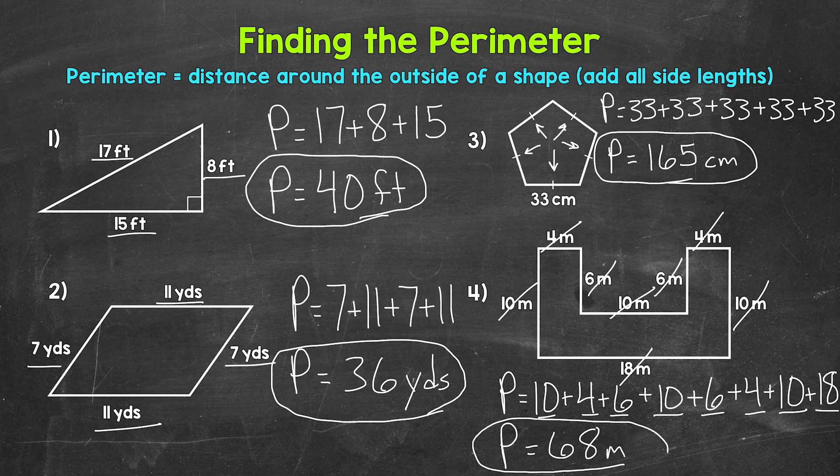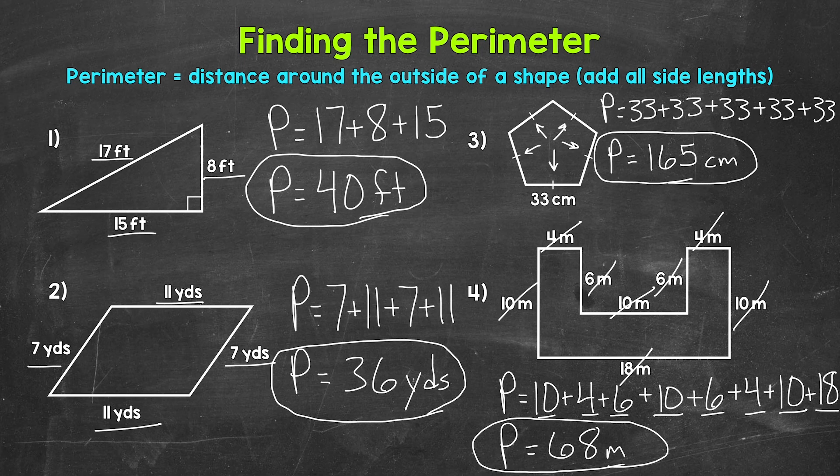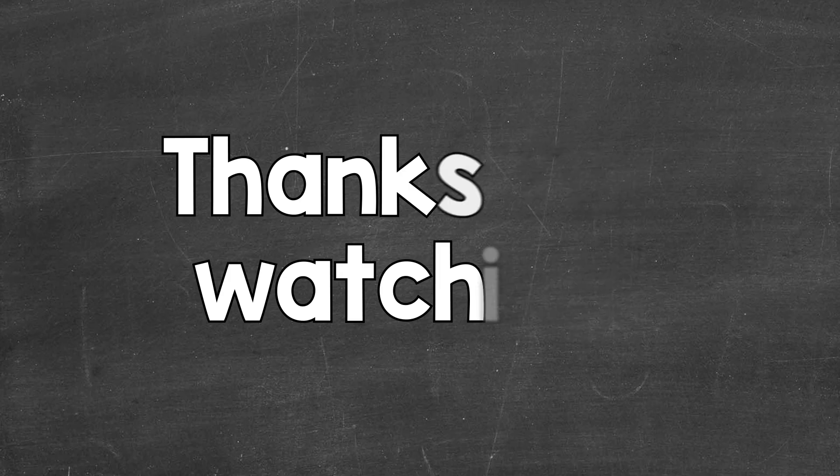So that's the distance around the outside of that shape. So there you have it. There's how to find the perimeter of a shape. Check the description for more videos on finding the perimeter. I hope that helped. Thanks so much for watching.